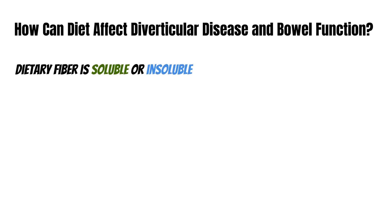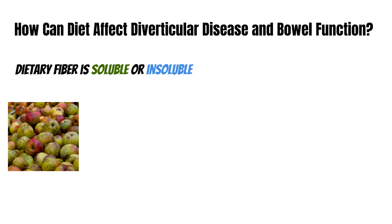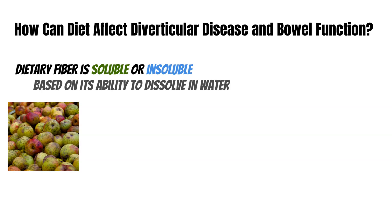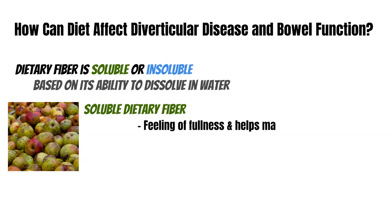Dietary fiber is either soluble or insoluble, based on its ability to dissolve in water. For example, the inner apple is soluble dietary fiber, whereas the peel of the apple is insoluble fiber. Honestly, it doesn't matter if the fiber is soluble or insoluble — the aim of the game is to consume fiber. Back in the day, a myth was that you should eat a low-residue diet — no nuts, seeds, popcorn, vegetable skins — because they could get stuck in your diverticula and cause problems. That's a myth. There's no evidence to support that. The aim of the game is fiber.